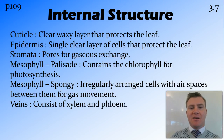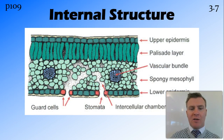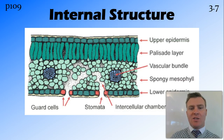We also have veins consisting of xylem and phloem that run through the leaf in order to move water into the leaf and take the products of photosynthesis — sugar or glucose — back down to the rest of the plant. Diagrammatically, we have the cuticle at the top, then the upper epidermal cells, the palisade layer which contains the chlorophyll, the spongy mesophyll with air spaces through those irregularly arranged cells, a vascular bundle consisting of xylem and phloem, the lower epidermis, and in between the lower epidermis we have the stomata surrounded by guard cells.